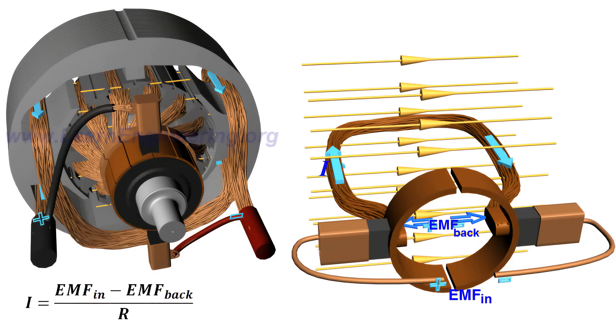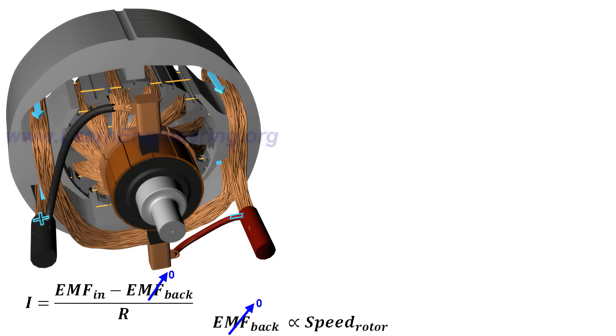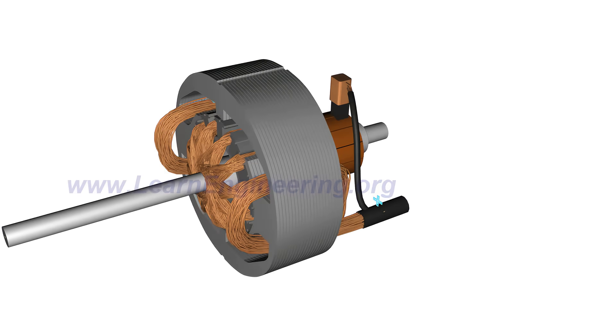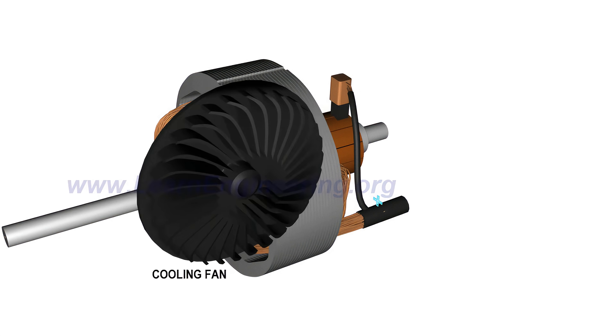Back EMF is proportional to the speed of the rotor. At the starting of the motor, back EMF is too low, thus the armature current becomes too high, leading to the burnout of the rotor. Thus, a proper starting mechanism that controls the applied input voltage is necessary in large DC motors.